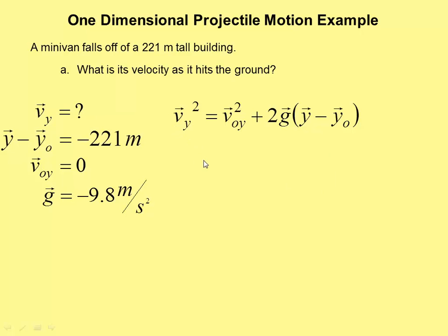Final vertical velocity squared equals initial vertical velocity squared plus two times the free fall acceleration times the vertical displacement. Now we are trying to find Vy. But before we start doing algebra, we have a zero.